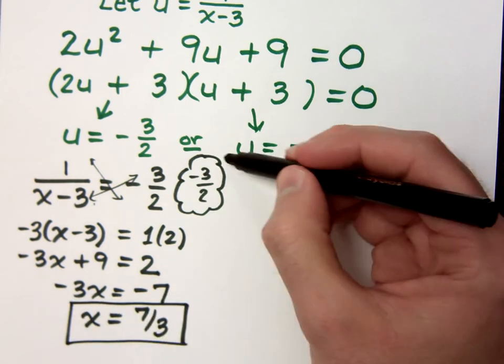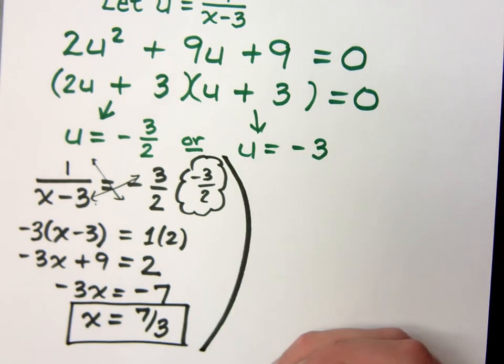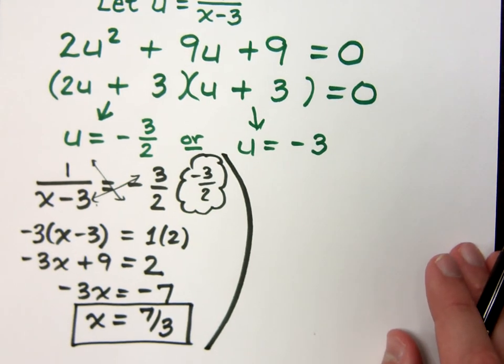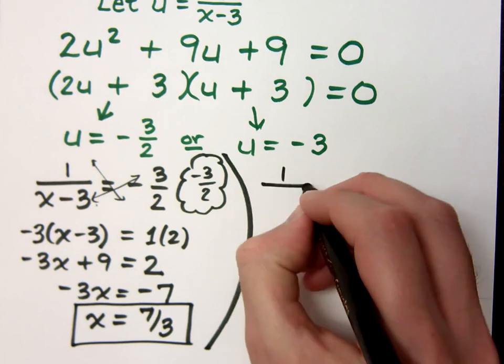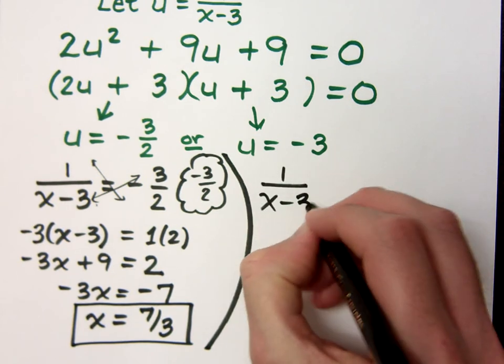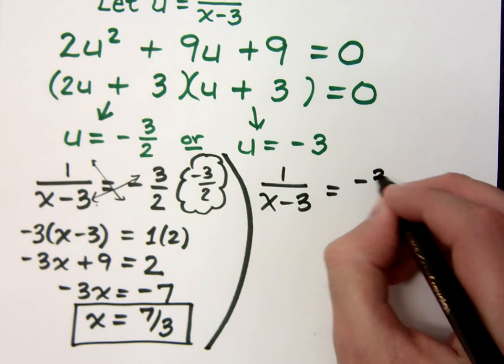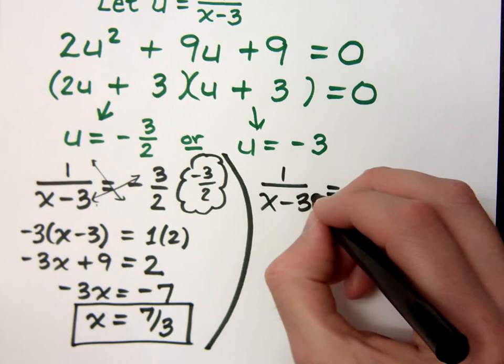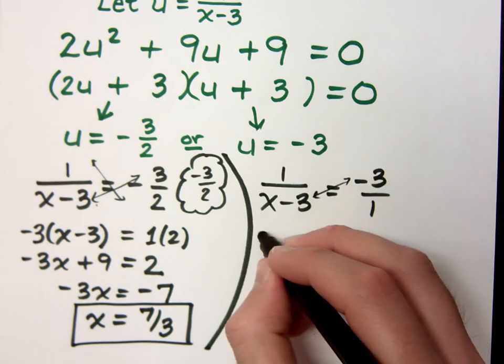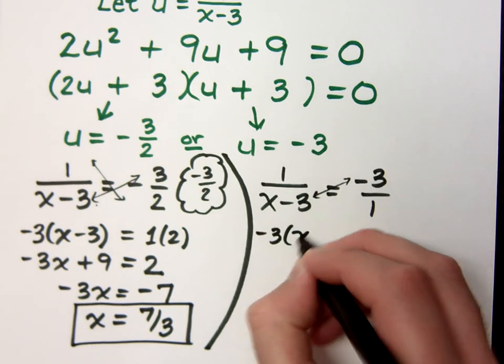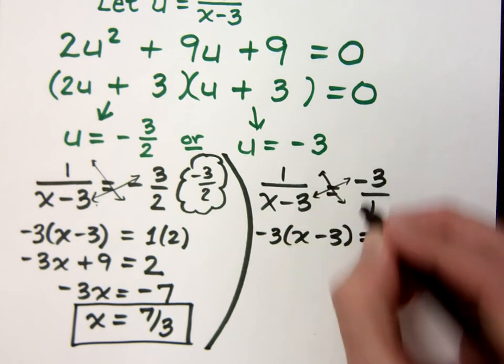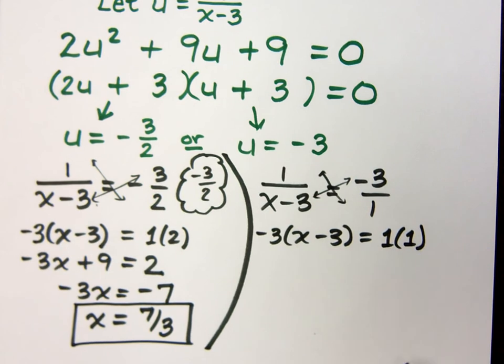I'm just going to do the same thing on the other side here. U will be replaced with its equivalent, which is 1 over x minus 3 is equal to negative 3. If it helps you out, put that over 1. So again, we have a proportion, and the cross products are equal.